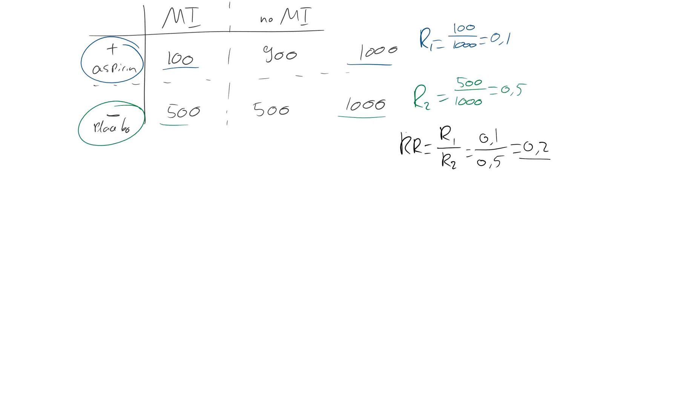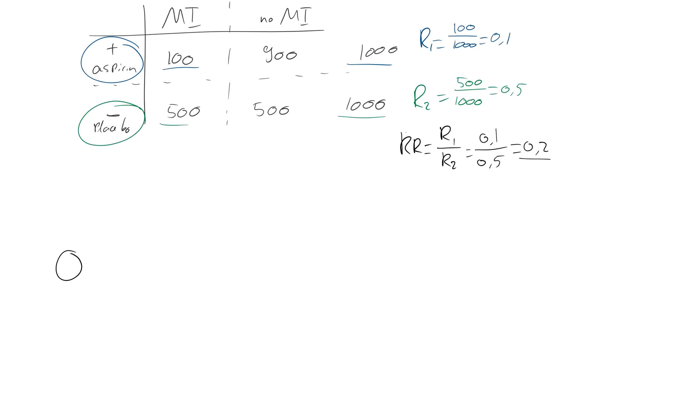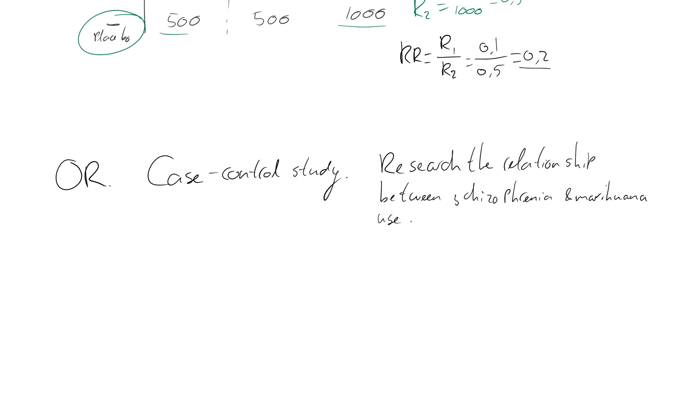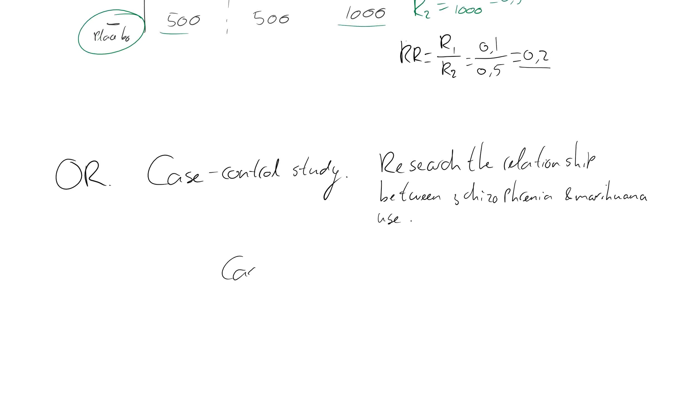Now let's take a look at an example of the odds ratio. Now we have a case control study, and we want to research the relationship between schizophrenia and marijuana use. We find, let's say, 1,000 cases and 10,000 controls.